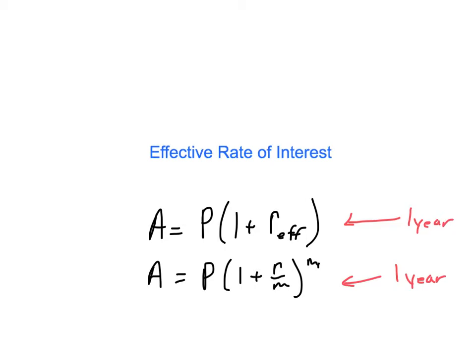So let's figure out if we can come up with a formula for this effective interest rate. Those two formulas that we had on the last slide are going to allow us to solve for the effective interest rate. Basically, we just set them equal to each other because they both equal our accumulated amount over one year.